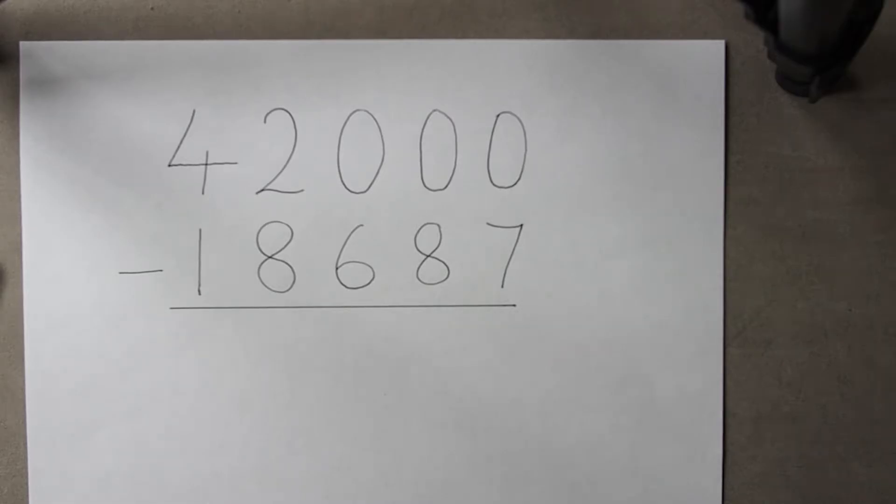So when we have larger numbers and we're exchanging across several zeros, pupils can get a bit confused,